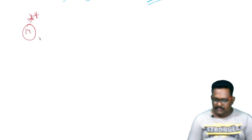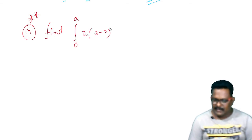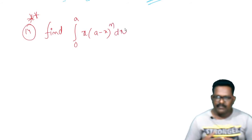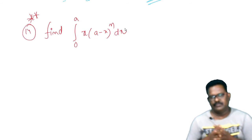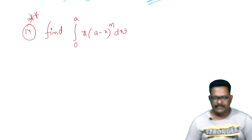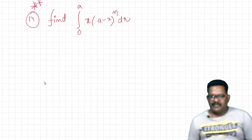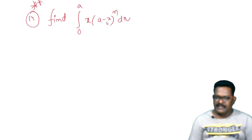Question number 14 — is it a double star question? Find the integral from 0 to a of x times (a minus x) to the power of n dx. A substitution x = a sin θ could be used, giving A sin²θ terms, but actually a simpler property approach will be applied.